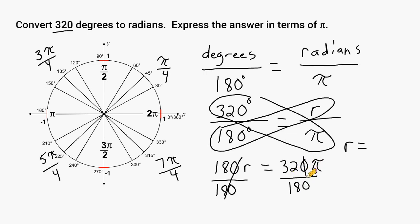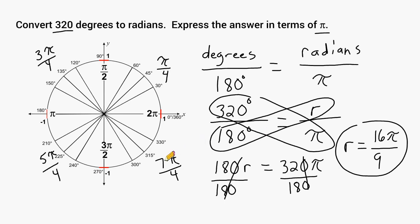We can start by crossing out the zeros, giving us 32 over 18. Both are even numbers, so we cut both in half. Half of 32 is 16, and half of 18 is 9. We keep pi in our numerator because the problem asks us to solve in terms of pi. So 320 degrees in radians is equal to 16 pi over 9. On the unit circle, 320 degrees would be at that position, expressed as 16 pi over 9 in radians.